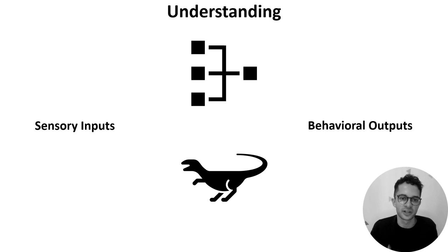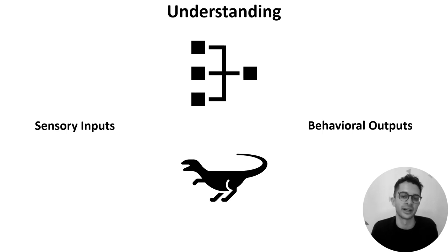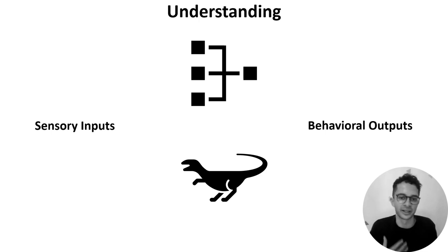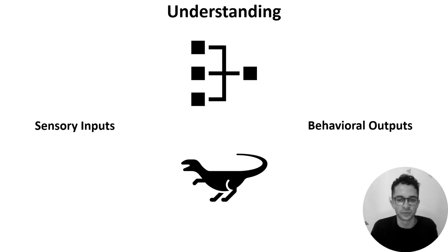How can we observe activity? In an artificial neural network, it's as simple as running a forward pass through the network and calculating the unit activations. In a spiking neural network, we can pass spikes into the network and record its hidden units, membrane voltages or spiking outputs. But in a real biological system, we need to choose how we're going to record neural activity.